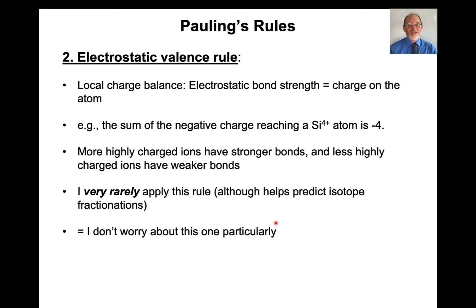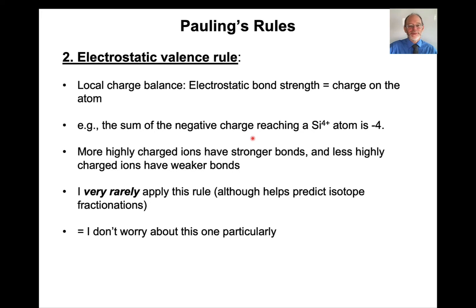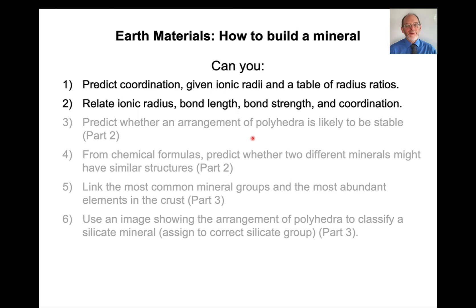The second rule is the electrostatic valence rule, which says there is local charge balance — the electrostatic bond strength is given by the charge on the atom. For example, the silicon atom, which is +4, must be balanced by a net charge of −4. This rule does help predict isotope fractionations based on bond strength, but for this course it's not a major rule to be too concerned about. You should be able to predict coordination given ionic radii and relate ionic radius, bond length, bond strength, and coordination to each other.